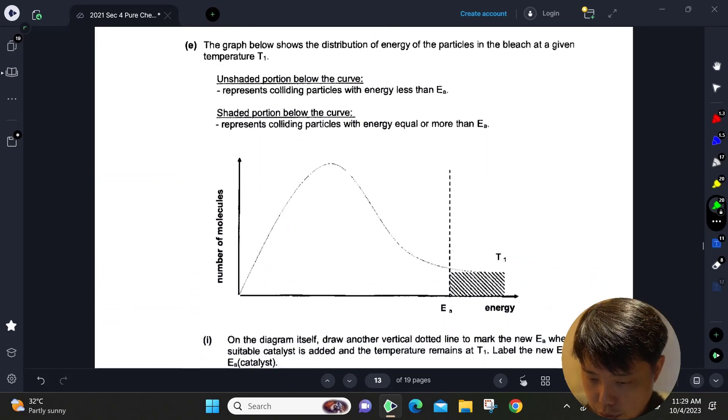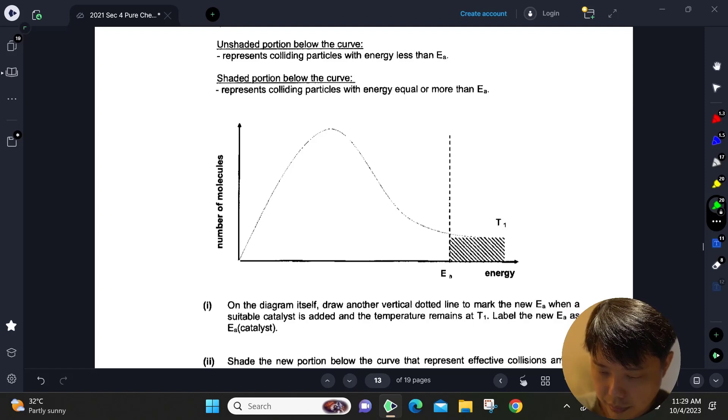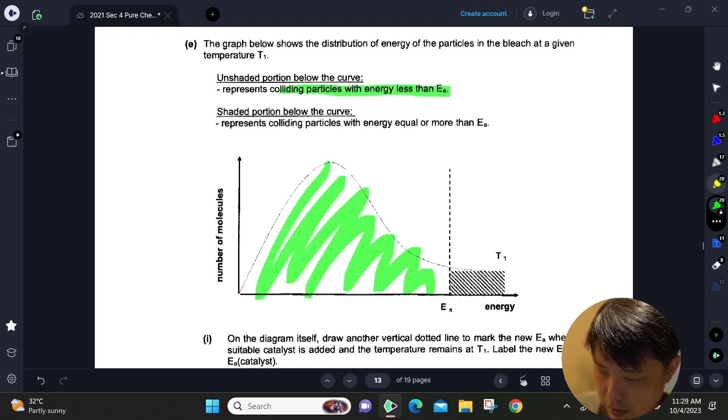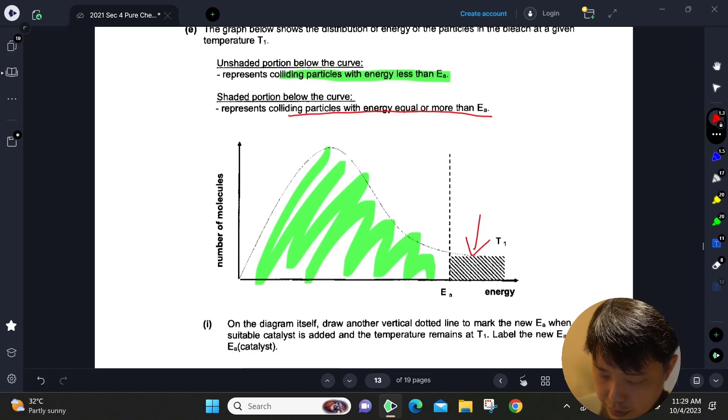The graph below shows distribution, like a Maxwell-Boltzmann curve. We haven't learned that, but they are saying that the unshaded portion represents colliding particles with energy less than Ea. This shaded portion means that the particles have energy equal or more than activation energy. If you add a suitable catalyst and temperature stays the same, where would the new Ea be? It will be somewhere here, a lower activation energy, and then you will have more of the reactant particles with enough energy to react.